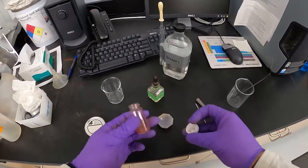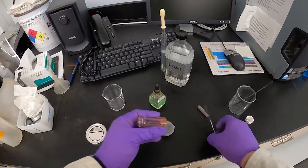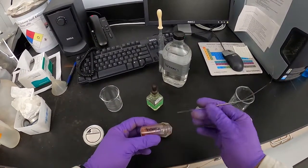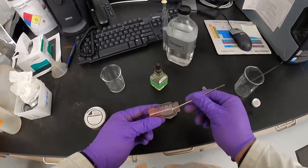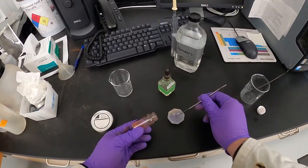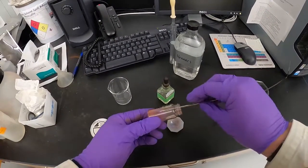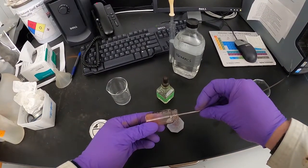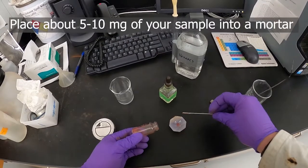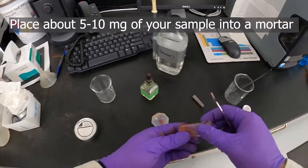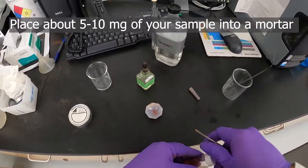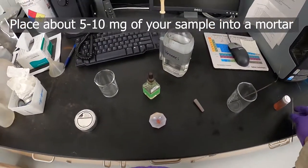To make the actual Nujol mull of our sample, I've got my iron ethylene dithiolate hexacarbonyl here, something to get a spectrum of. Add a little bit of that to our mortar and pestle here, just a little bit, maybe 5 to 10 milligrams somewhere in that range.